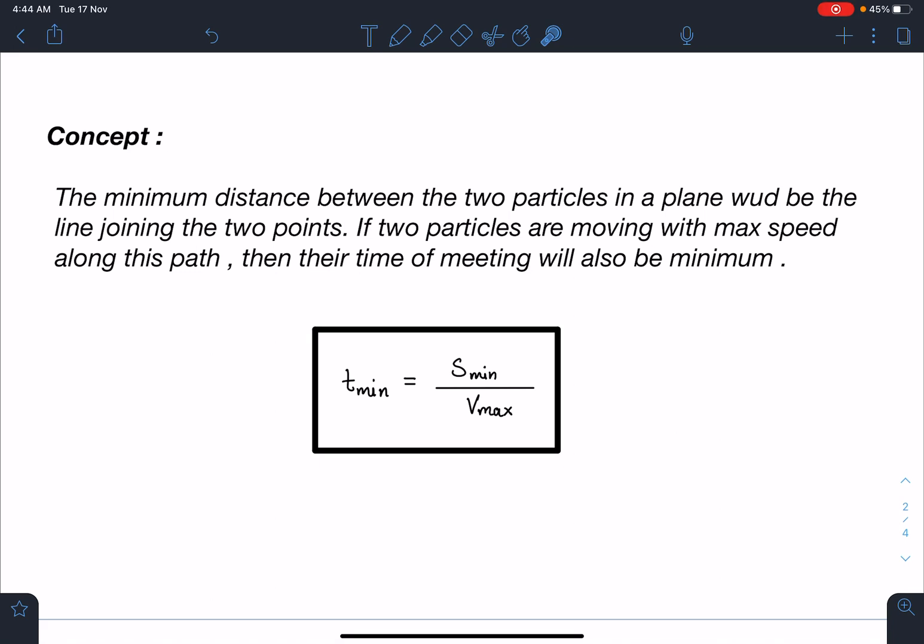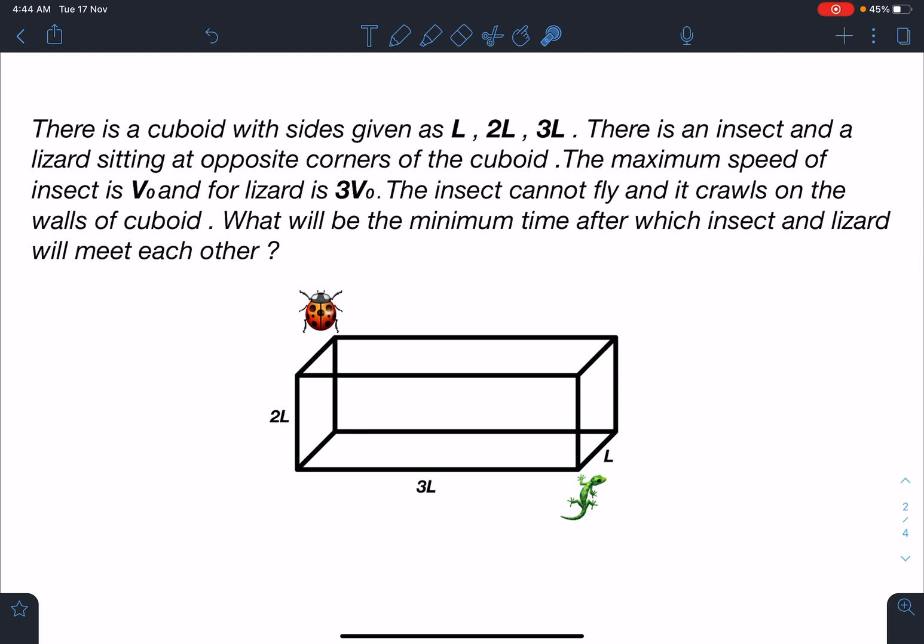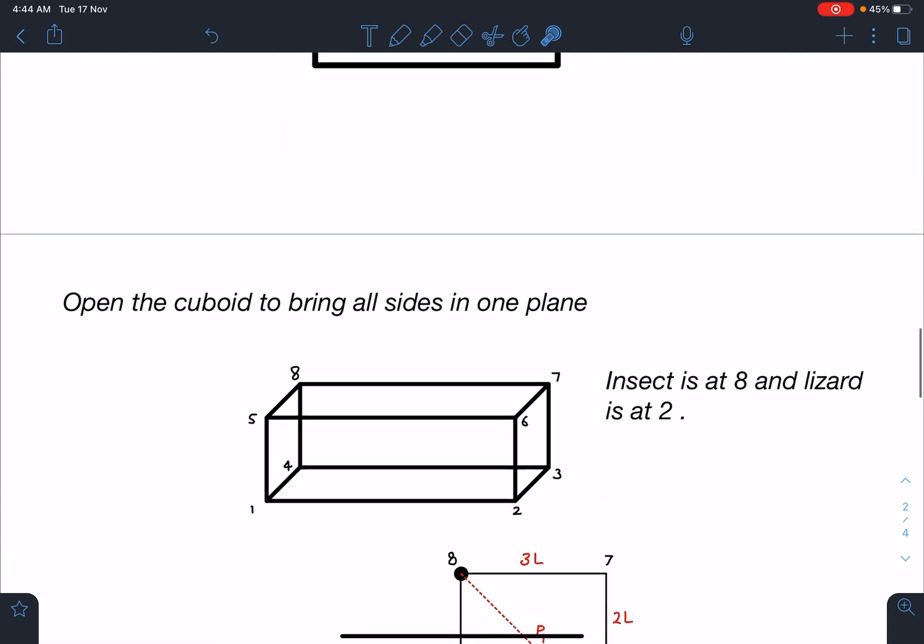Here we have a 3D structure and it becomes a very tough problem if you try to analyze it in 3D. So what we are going to do is we'll open this cuboid and bring all sides in one plane. As per this diagram, I have given the numbers 1, 2, 3, 4, 5, 6, 7, 8. The lizard is placed at 2 and the insect is placed at corner 8.